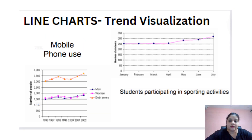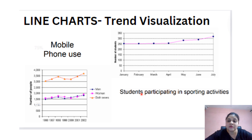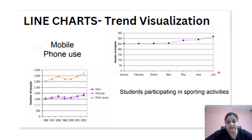Let's see an example. We have two examples: one is a single line chart and one is a multiple line chart. In the single line chart, we analyze the trend of number of students participating in sports activity. We can see that from January to March, the number of students enrolled in sports activity is 250, which started increasing in April and reaches beyond 300 till the month of July.